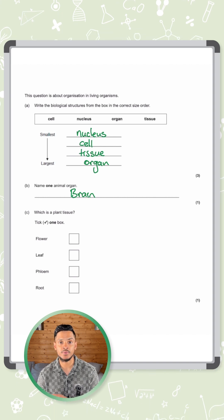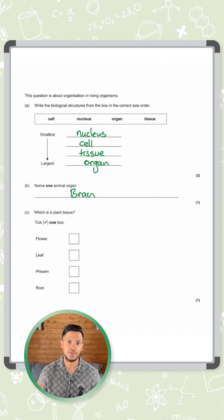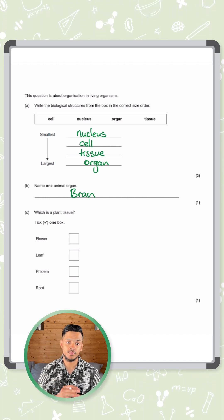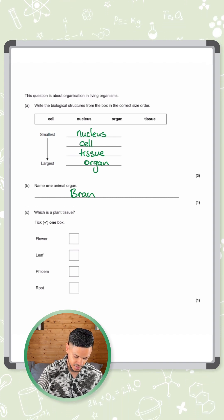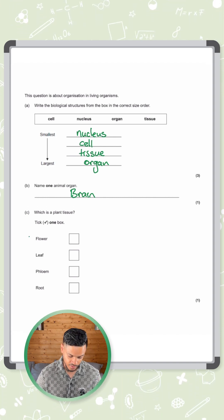The flower is an organ. It's made up of loads of different tissues. Think about it. It's got petals, it's got all the reproductive parts to it inside as well. It's got loads of different tissues. I'd say that's an organ, so not a flower.